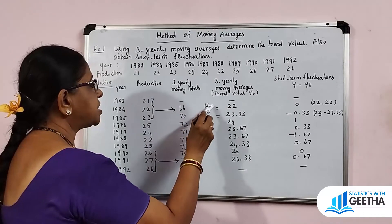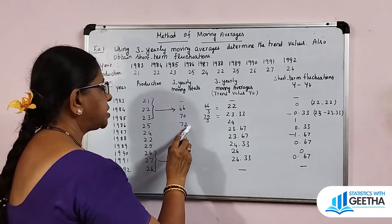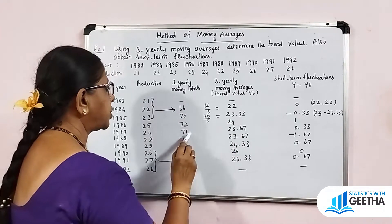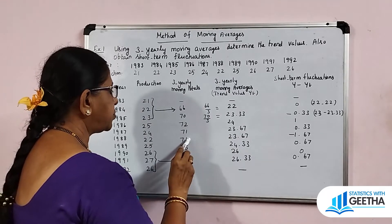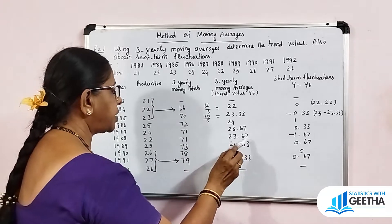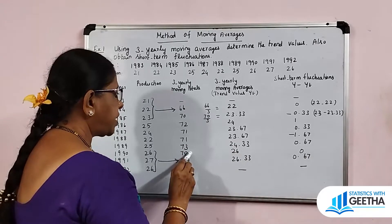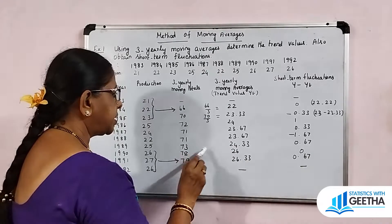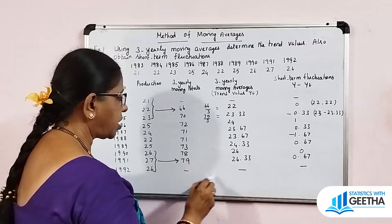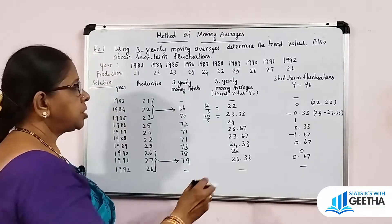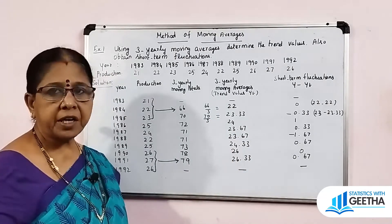Dividing the moving totals by 3: 66÷3 = 22, 70÷3 = 23.33, 72÷3 = 24, 71÷3 = 23.67, 71÷3 = 23.67, 73÷3 = 24.33, 78÷3 = 26, 78÷3 = 26, 79÷3 = 26.33. The last year has no moving average. These moving averages are the trend values, denoted by Yt.